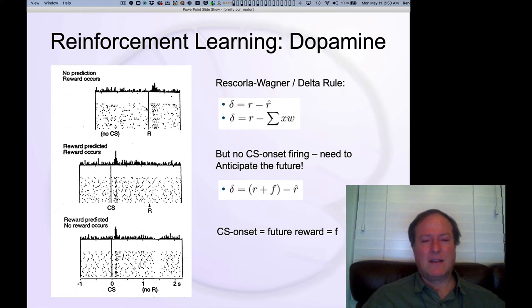And the key result comes from these amazing recordings, very hard to do, made by Wolfram Schultz in monkeys. And this kind of diagram here, which is shown so many times and is so impactful, really kind of fits perfectly with a mathematical formulation that had been developed many years earlier by Rich Sutton and Andy Barto.